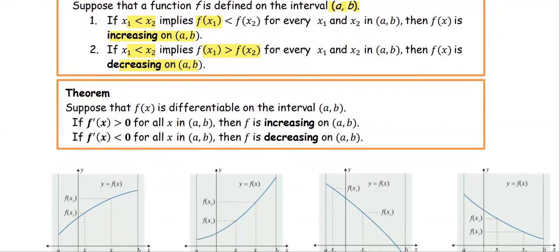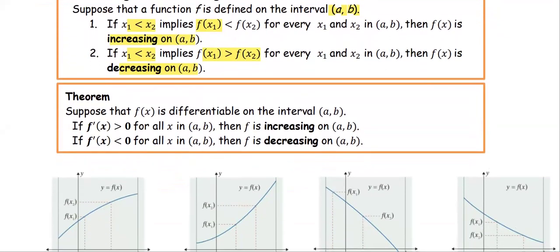Recall the derivative is the slope of the tangent line. Suppose that f(x) is differentiable on the interval (a, b). If f′ > 0 for every x in the open interval (a, b), then f is increasing on that interval. Similarly, if f′ < 0, or the slope is less than 0, then the function is decreasing on the open interval (a, b).